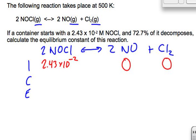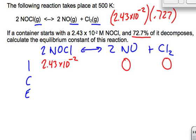We're trying to find the equilibrium constant. According to this, 72.7% is going to decompose. So what is 72.7% of the initial amount, 2.43 times 10 to the negative 2? We multiply by 0.727, the decimal form. So 2.43 times 10 to the negative 2 times 0.727 gives us 1.77 times 10 to the negative 2.